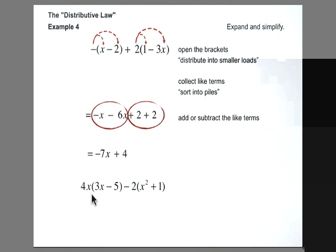So now let's look at 4x times 3x minus 5 and negative 2 times x squared plus 1. And this is where it was important that we did the quick review of exponent laws because we're going to have to start thinking about multiplying letters by letters.